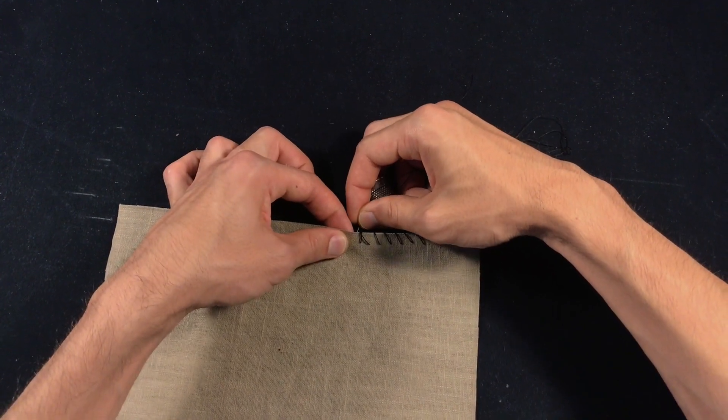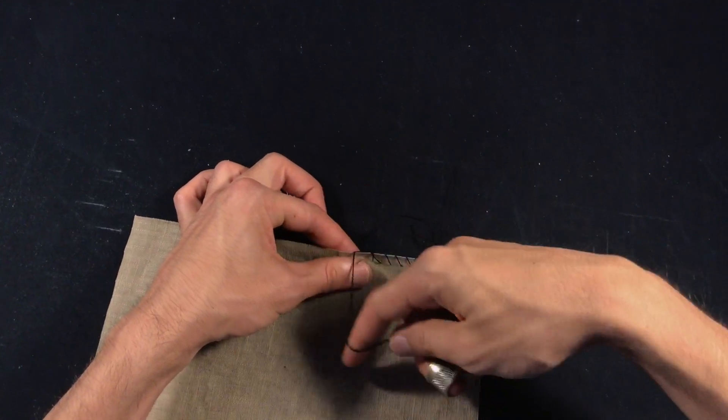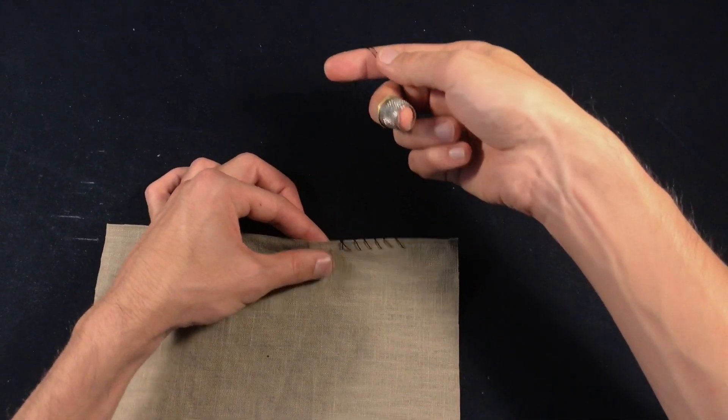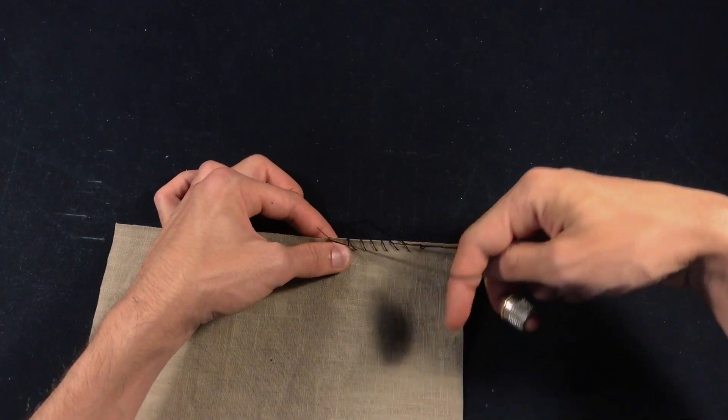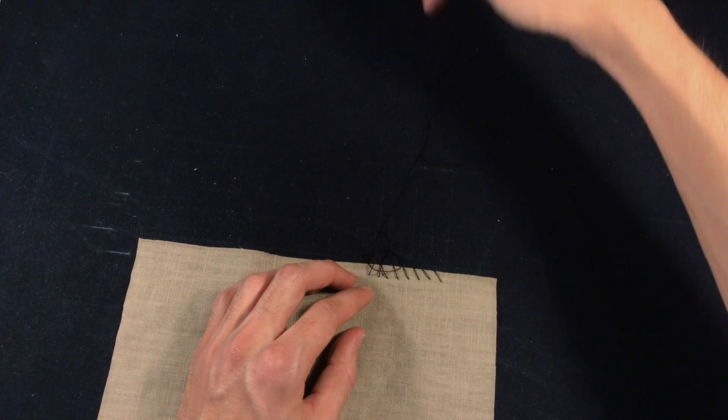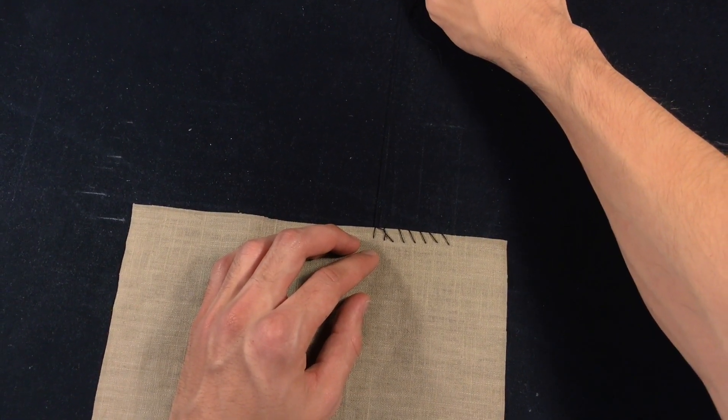Then for the next stitch, you're going to repeat. This is also called a blanket stitch. Again, counterclockwise over the needle, and pull towards the edge in the same direction.